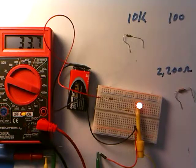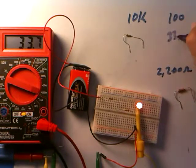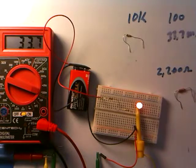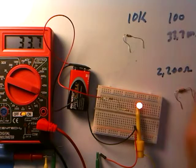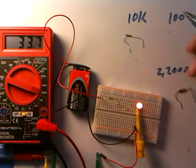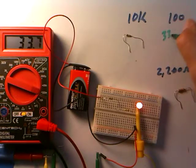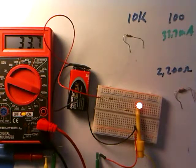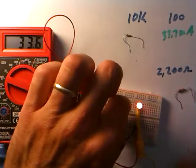That's the advantage of doing these current measurements - to get an idea of how much is flowing. With the 100 ohm resistor, we have 33.7 milliamps flowing.